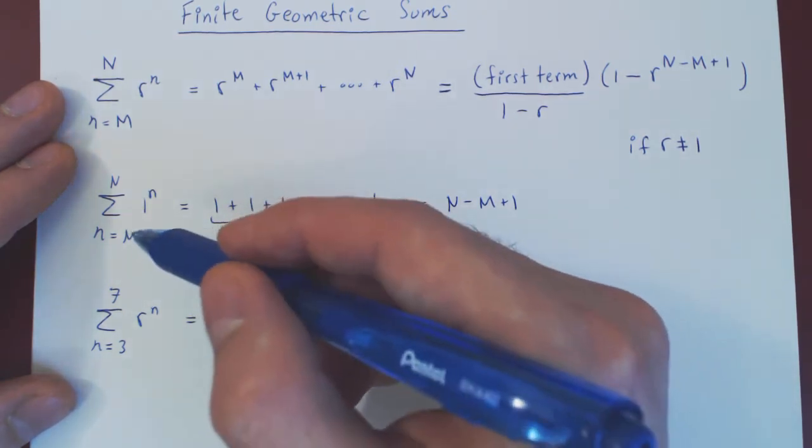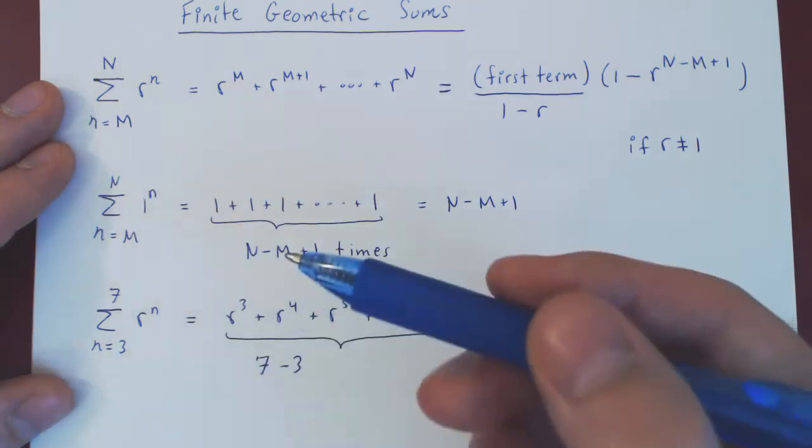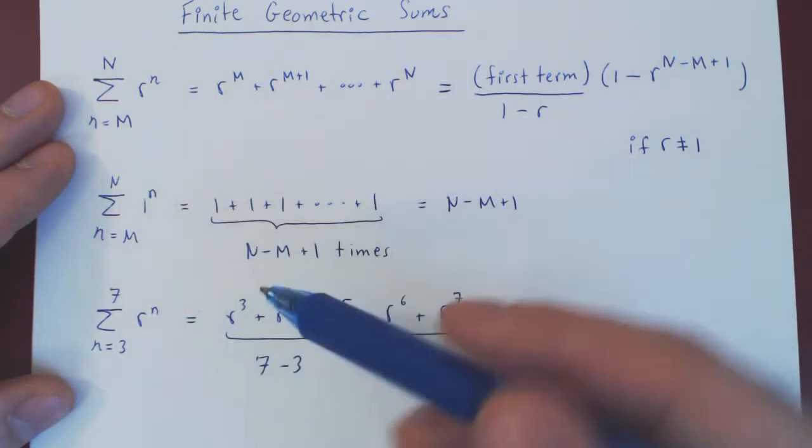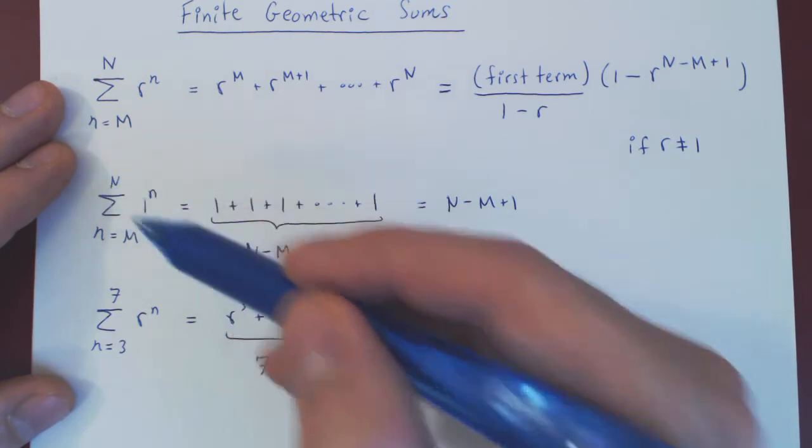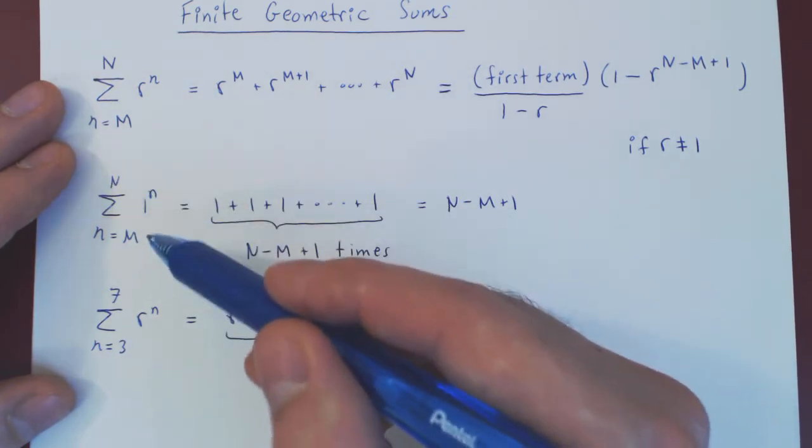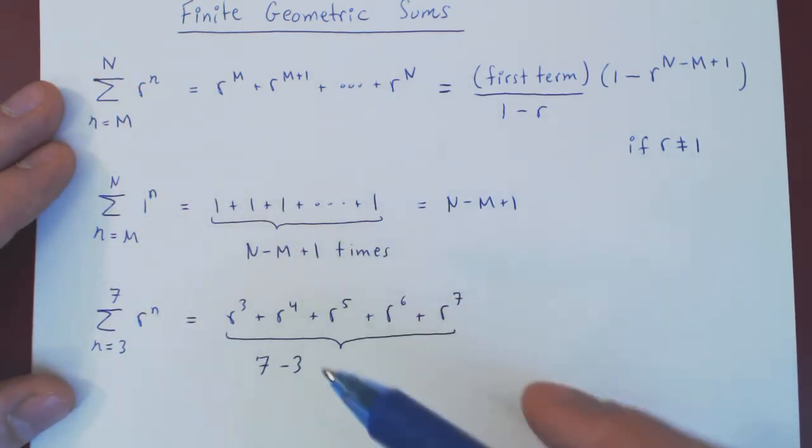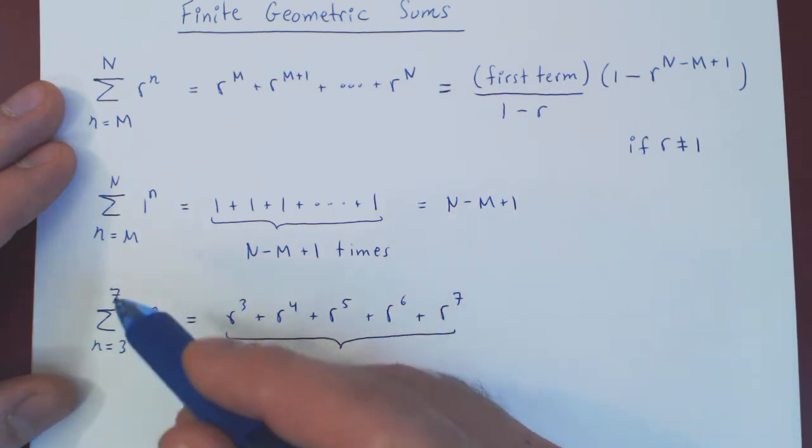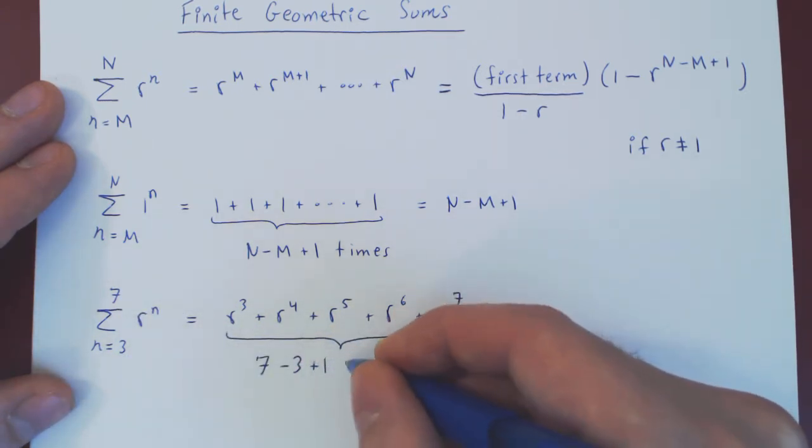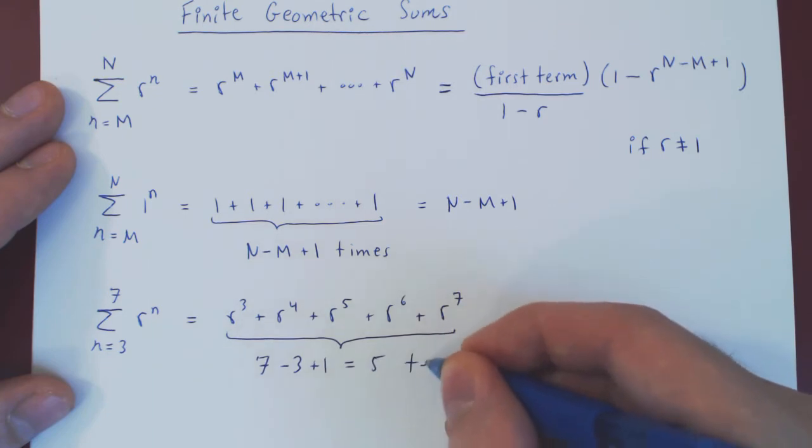So when you have a finite sum, and you're asking how many terms am I summing, it's always the upper bound of summation minus the lower bound of summation plus 1. So here we are summing 7 minus 3 plus 1, which equals 5 terms.